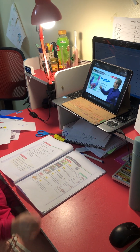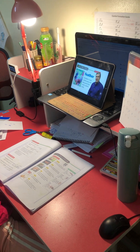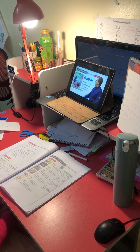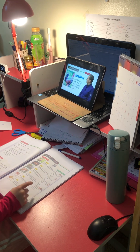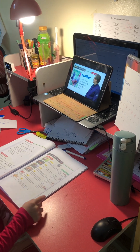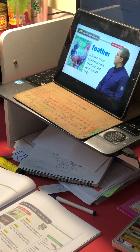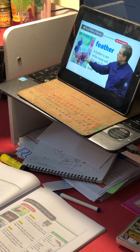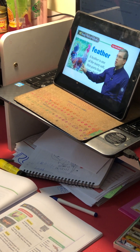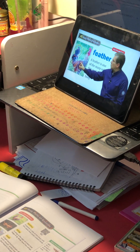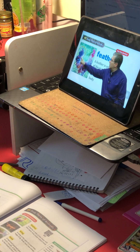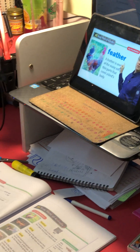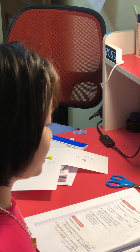Now, we are going to learn about key vocabulary. It is a feather — you see the circle here? A feather is one of the many soft, thin parts that cover a bird's body. A long time ago, people used feathers to write.